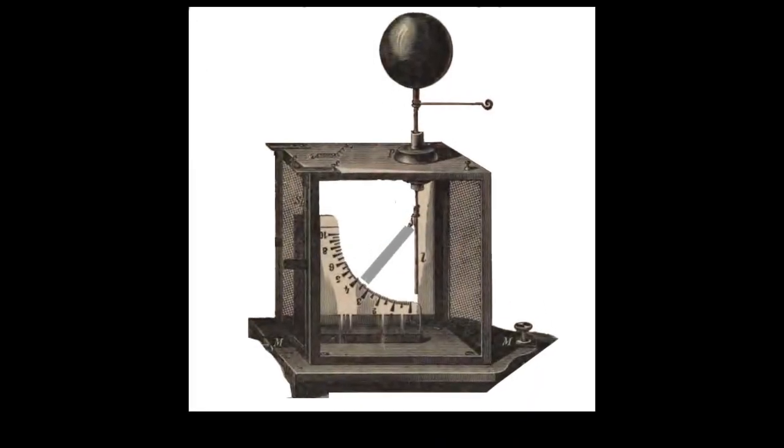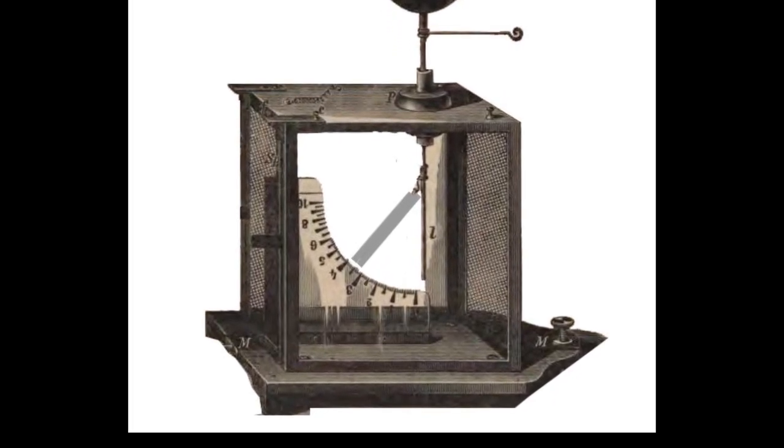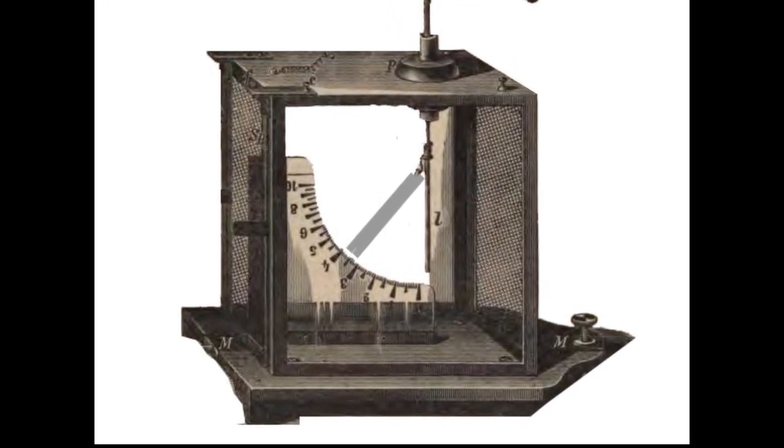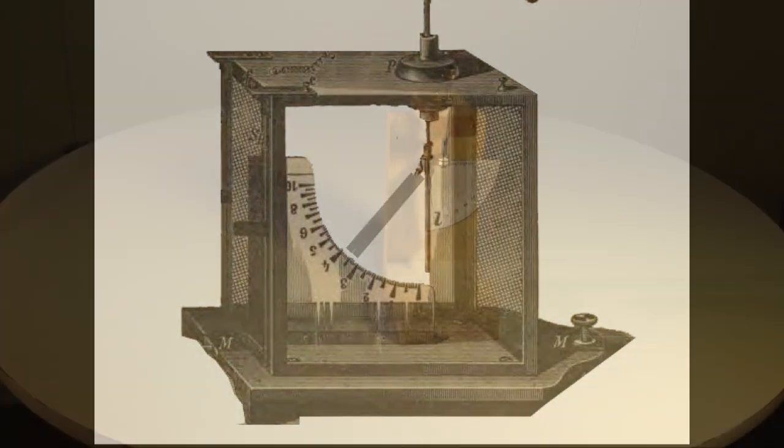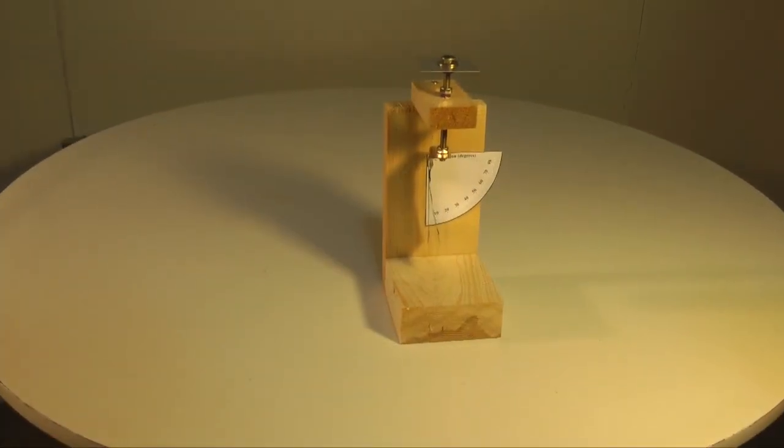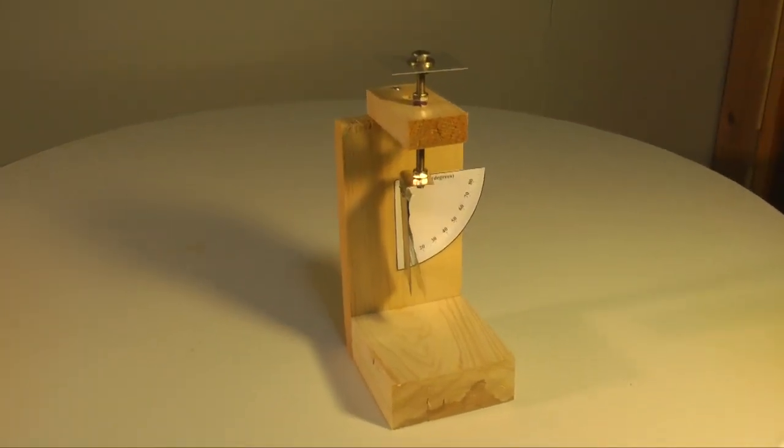Bennett's electroscope also measured the approximate strength of the field. This can be done by measuring the angle the leaves separate by.